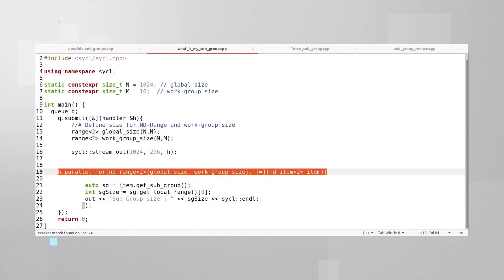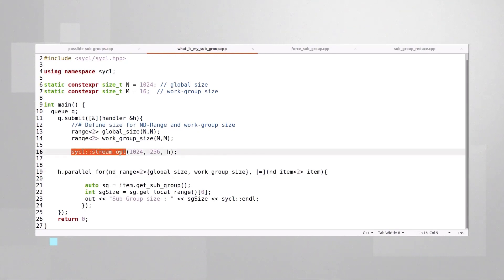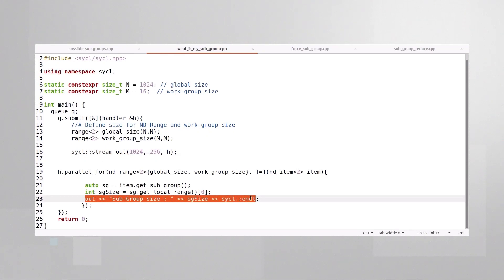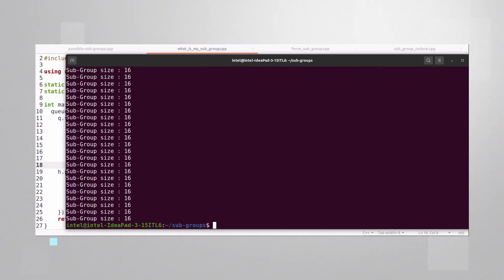Now let's check what is my subgroup size. I'm going to print the subgroup size from the kernel. GPUs cannot usually do that, so I'll use this command SYCL stream and you can see here the out command. Compile and run. And my subgroup size is 16.